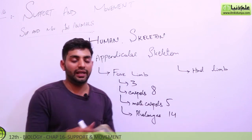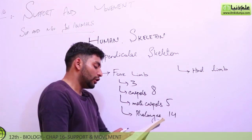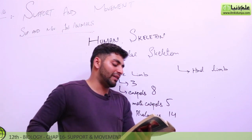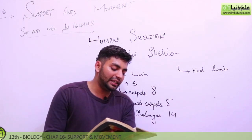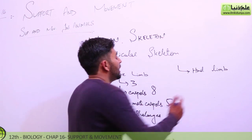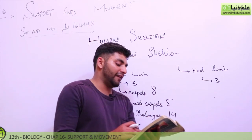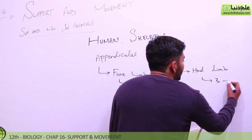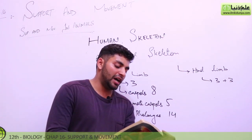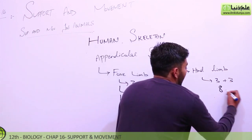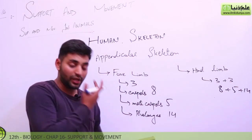Now let us go to pelvic girdle and hind limb. The pelvic girdle connects to the vertebral column with two coxal bones, each formed by the fusion of three bones: ileum, ischium, and pubis. The hind limb consists of one femur, two bones — tibia and fibula — then eight tarsals, five metatarsals, and fourteen phalanges, same as we discussed in forelimbs.